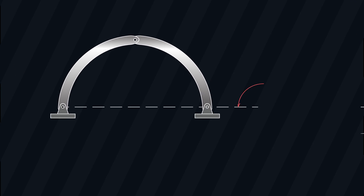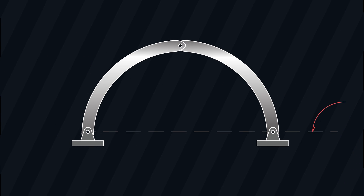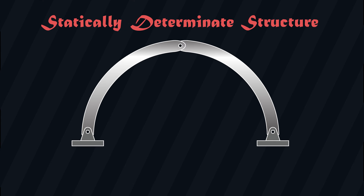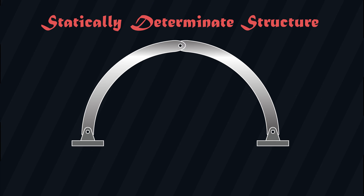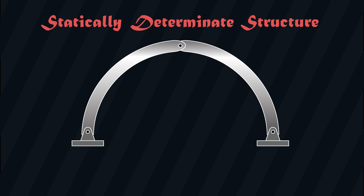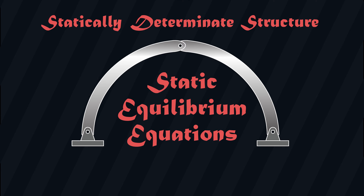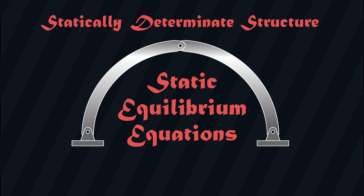Let's talk about this one first. When we analyze a 3-Hinge Arc, or any structure for that matter, we always try to solve first for the reaction at its supports. And in this process, since a 3-Hinge Arc is a statically determined structure, you will only need the static equilibrium equations.